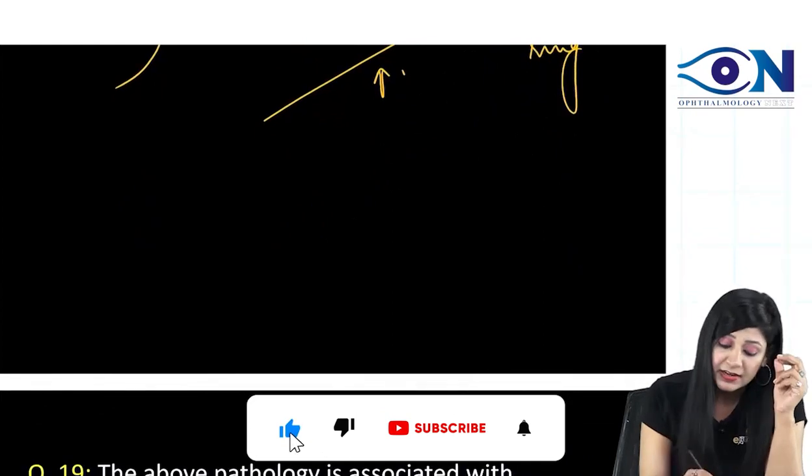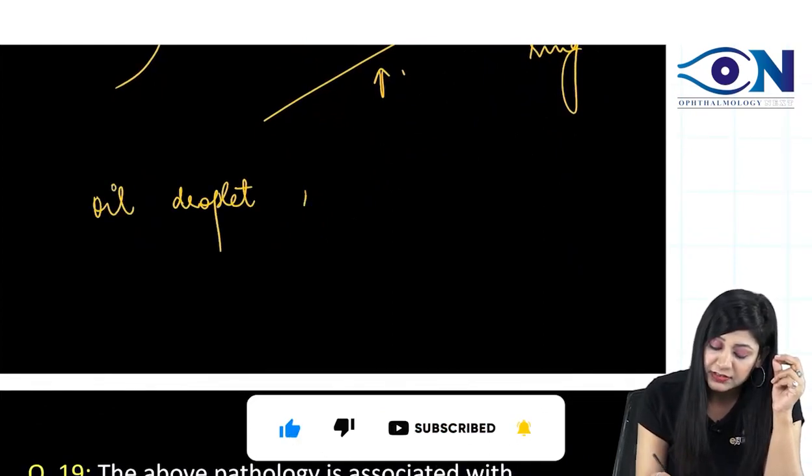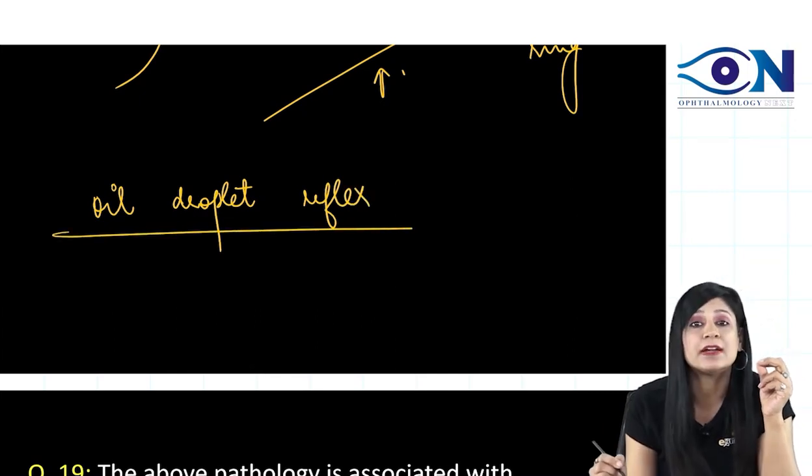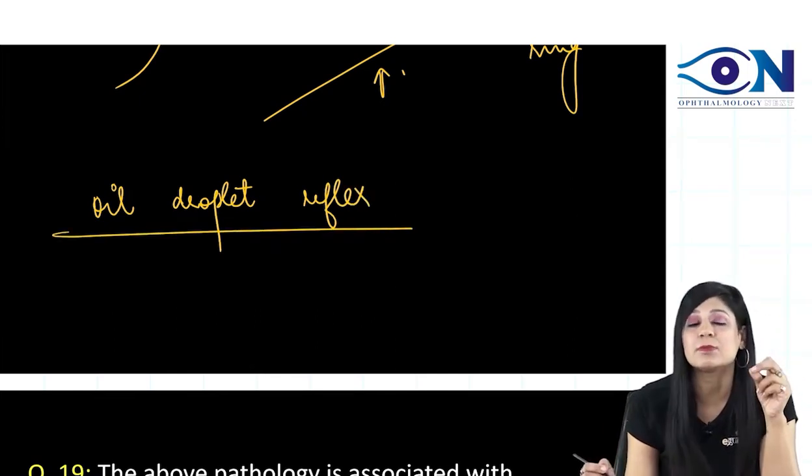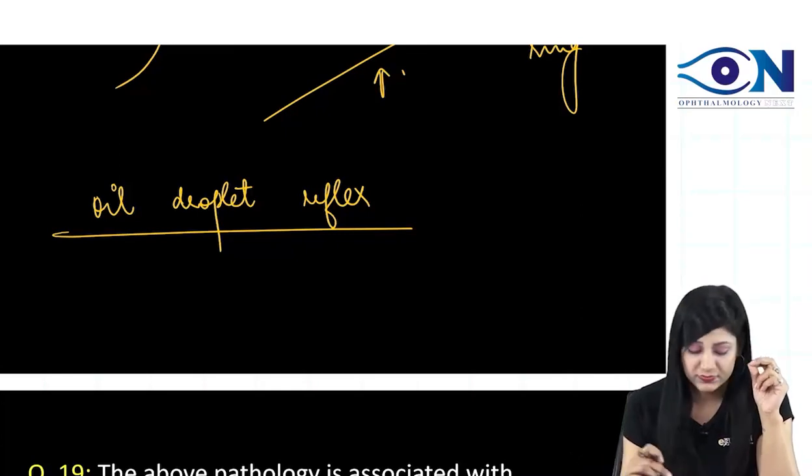And then another important thing is the oil droplet reflex. While oil droplet cataract is found in galactosemia, oil droplet reflex is found in cases of keratoconus.